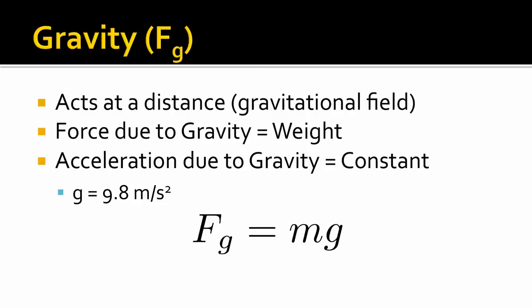The acceleration due to gravity is a constant as long as we're near the surface of the Earth. If you're on the surface of another planet, it would be a different constant. But on the surface of the Earth, or near the surface of the Earth, our acceleration due to gravity gets a special letter, a lowercase g, and that is always equal to 9.8 meters per second squared. Doesn't matter where you are or what's happening, as long as you're near the surface of the Earth, 9.8 meters per second squared. And the equation for the force of gravity, Fg equals mg.